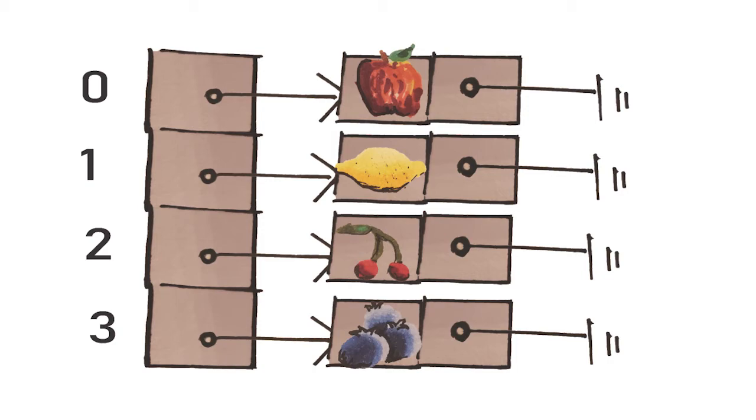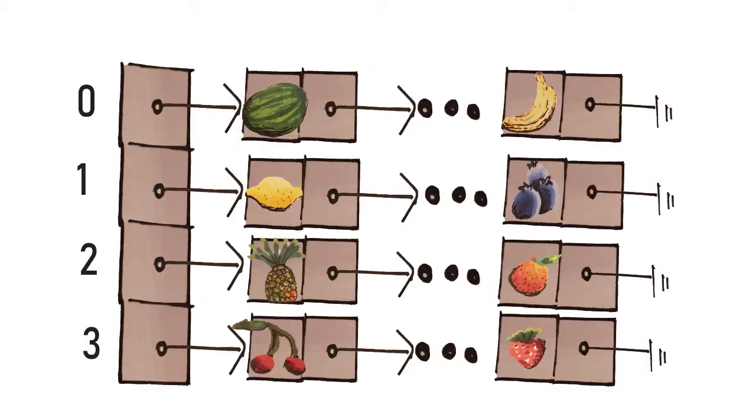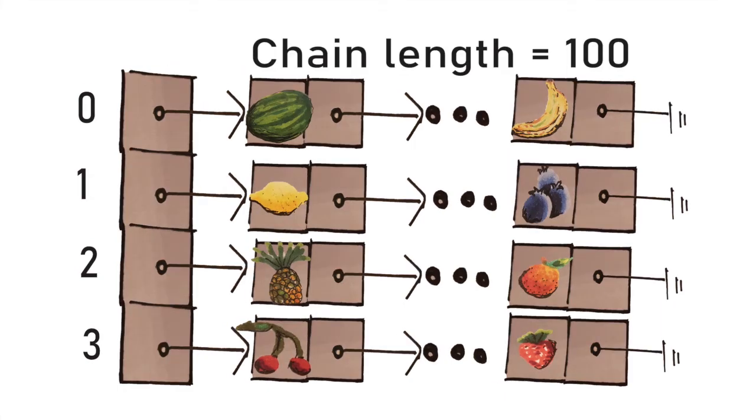Say we started off with our little 4 fruit hash table. As we kept adding fruit, even if they were perfectly distributed, the chains would get really, really long. If we had 400 fruit, each chain would be 100 elements long. If we have 4n fruit, each chain would be n elements long. That's not O(1) anymore.